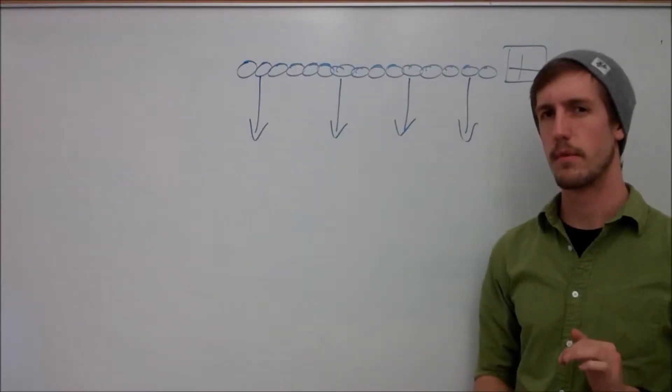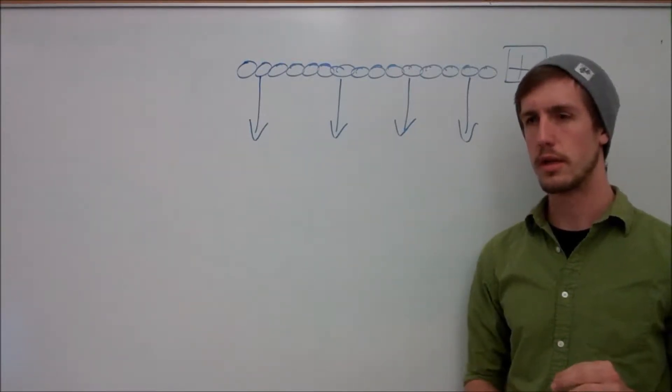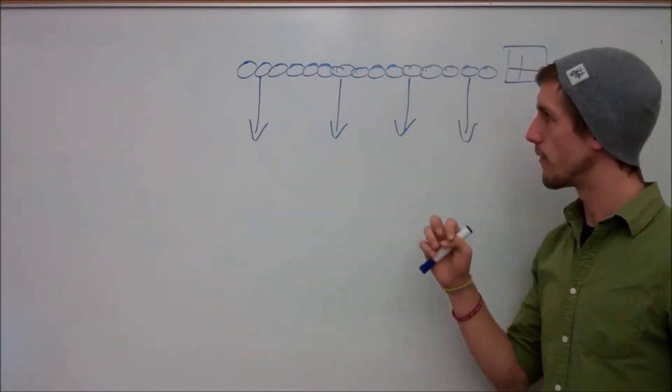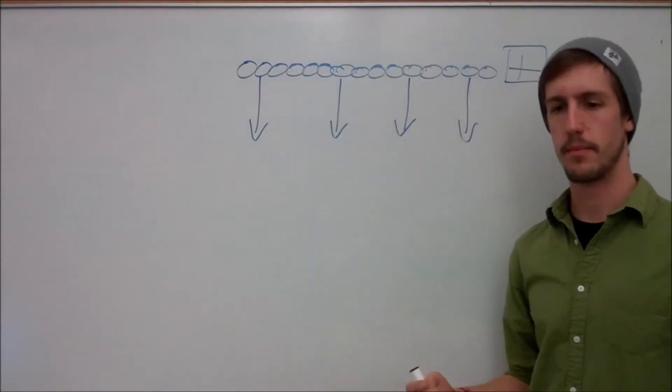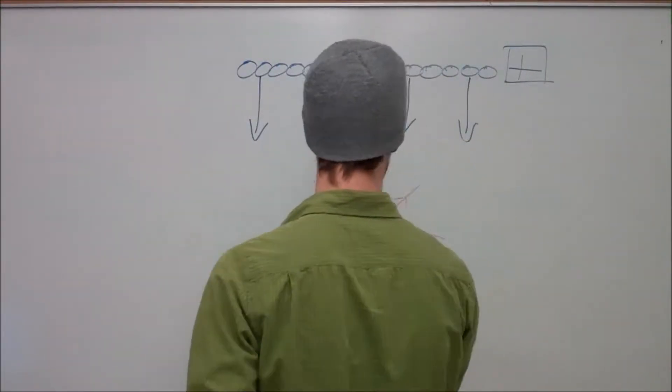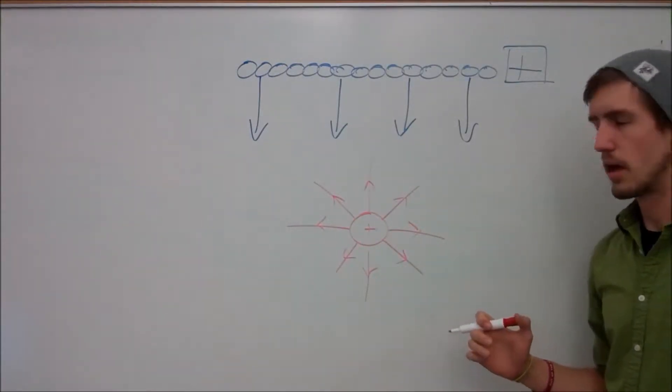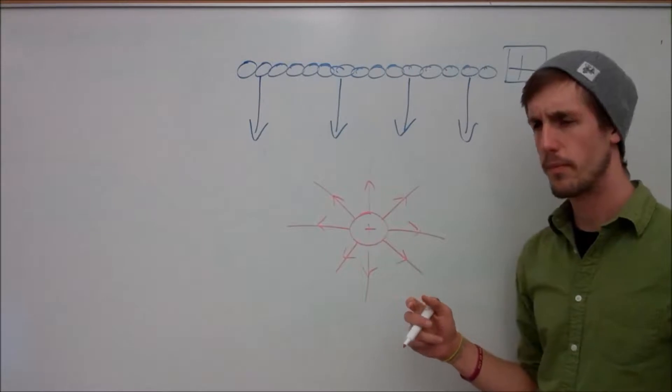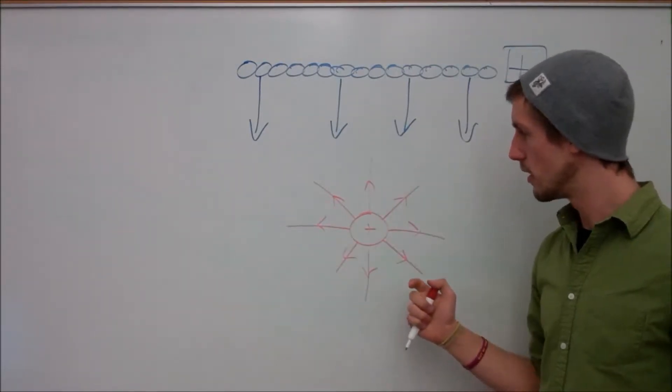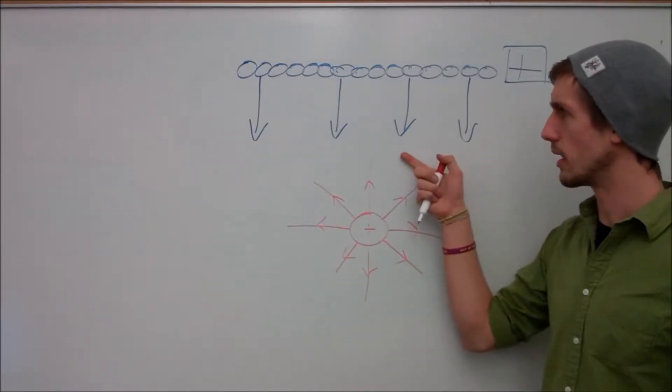But wait, I thought when we drew our points before, the electric field lines were radiating out away from in every direction, something that looks like this. And so if these are all pointing out in every direction - left, right, up, down - why is it that you're saying now that these are only pointing downwards?